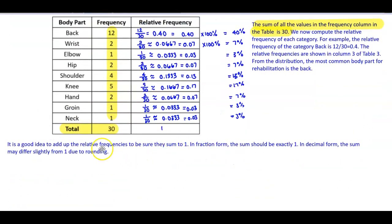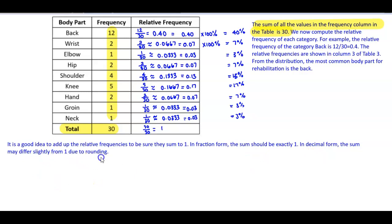It is a good idea to add up the relative frequencies to confirm they sum to one. In fraction form, the sum should be exactly one: 12+2+1+2+4+5+2+1+1 over 30 equals 30/30. In decimal form, the sum may differ slightly from 1 due to rounding, but in this example we get exactly 1.